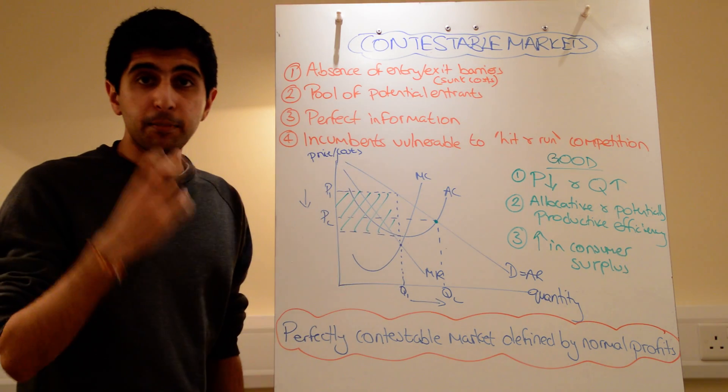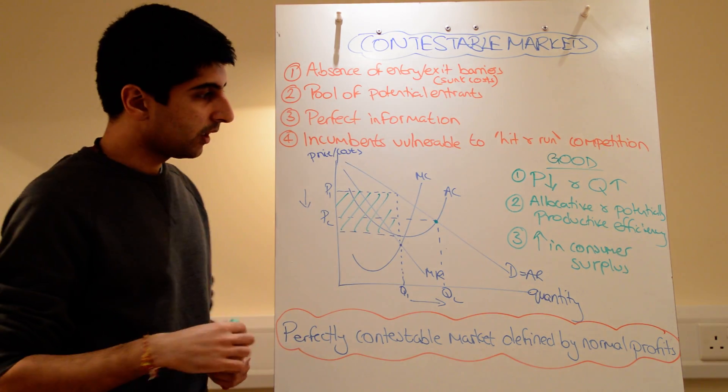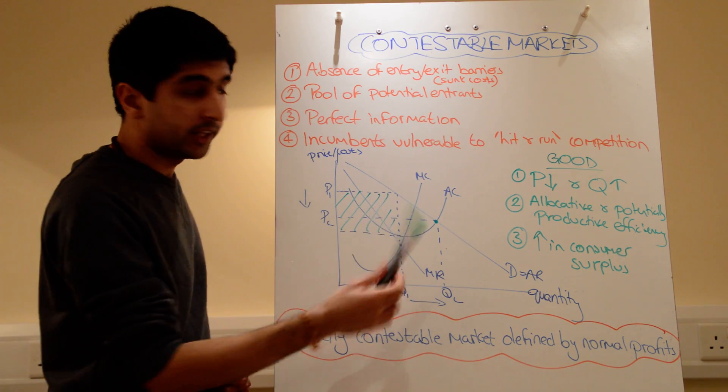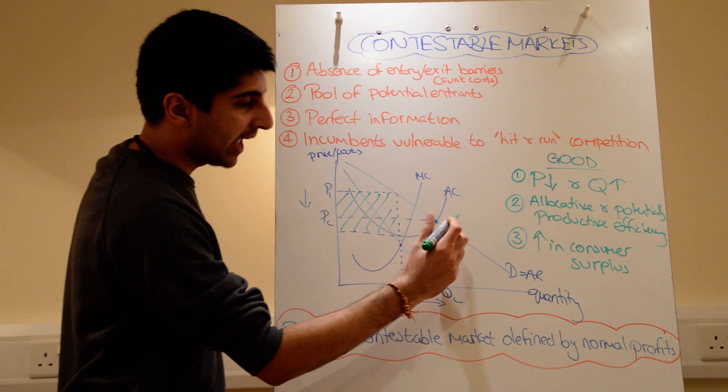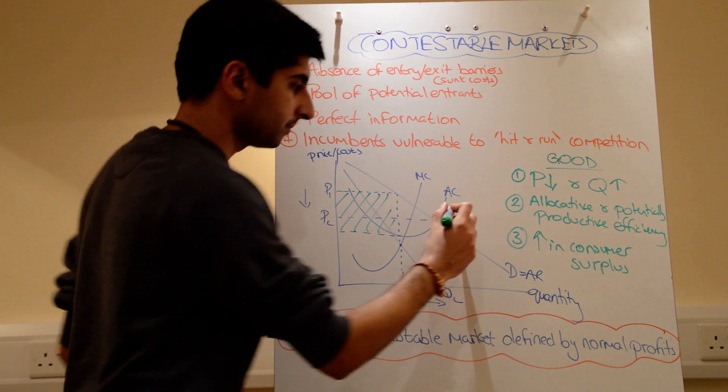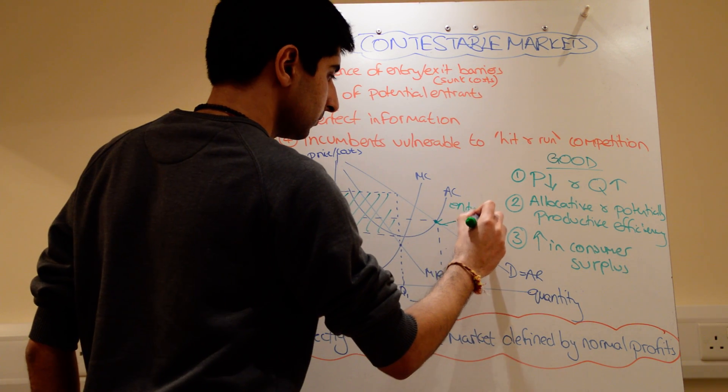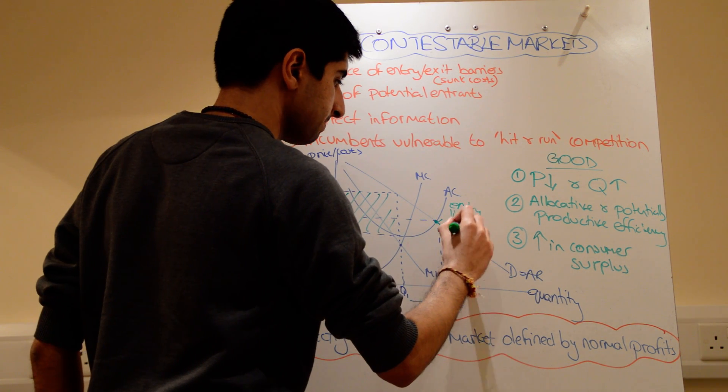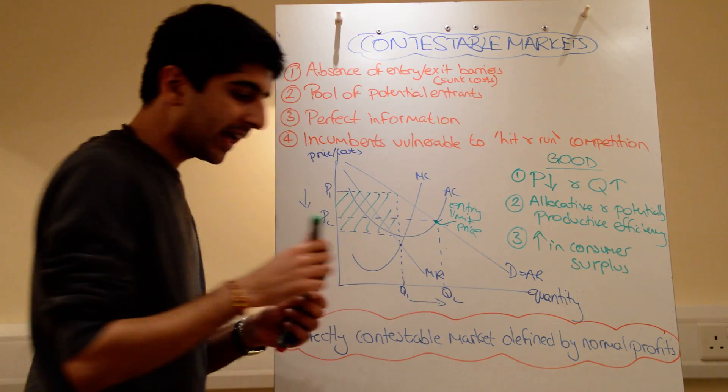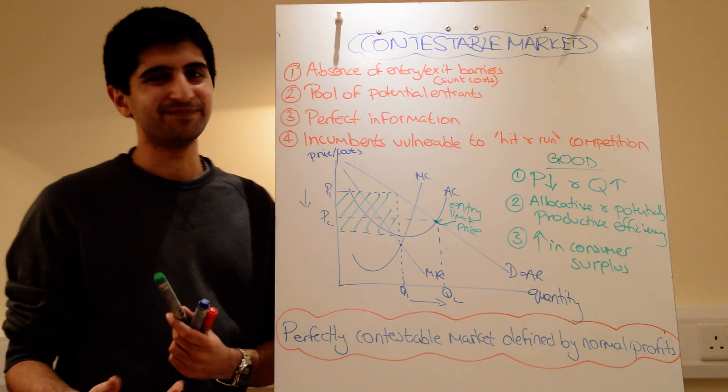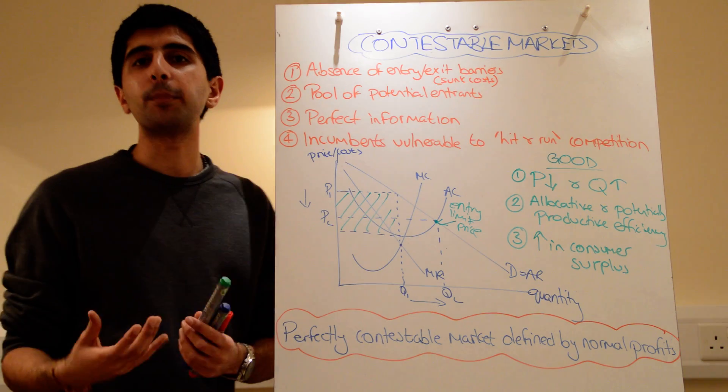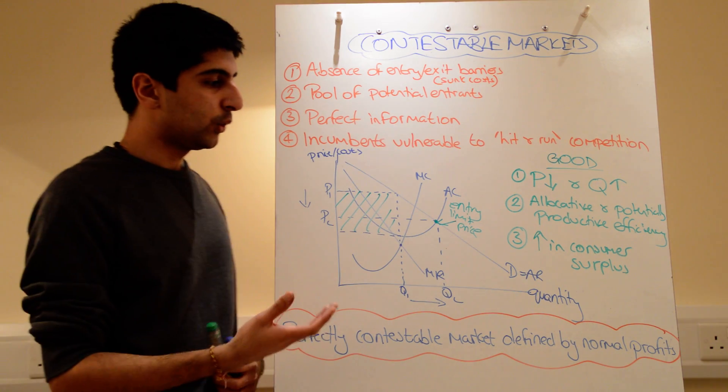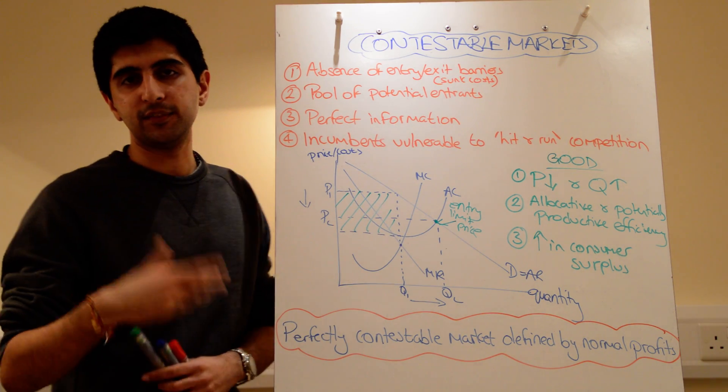So that's what will happen in a perfectly contestable market. Firms will produce where AR equals AC. We call that the entry limit price. We call that because that is the price which will limit new entry. That's the price which is going to stop new firms from getting into the market.